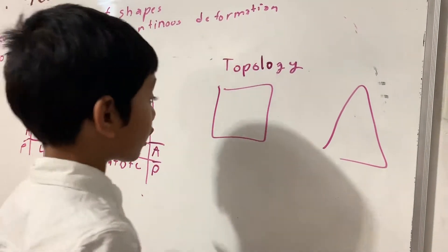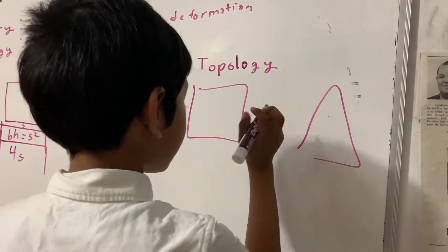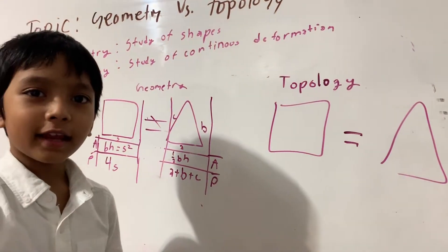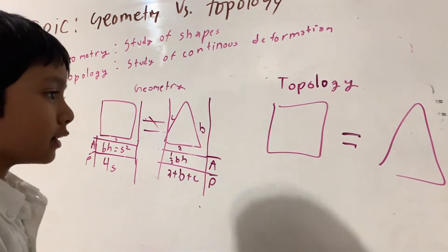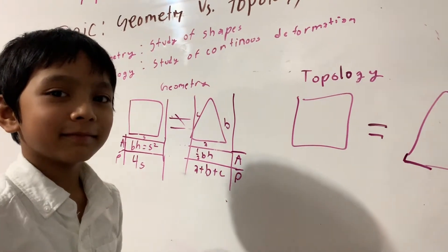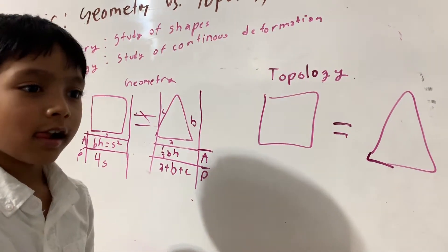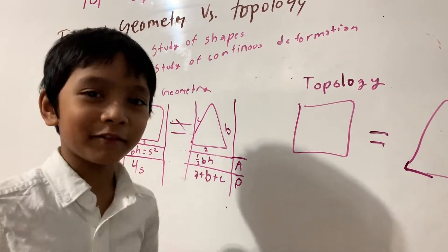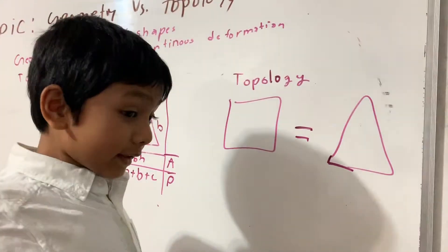Now, in topology, they actually are the same. I already told you that if you told your elementary school teacher a square equals a triangle, they would probably freak out. But that actually is the case in topology.